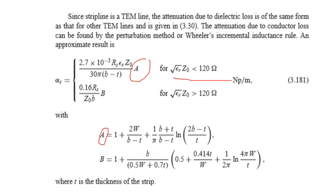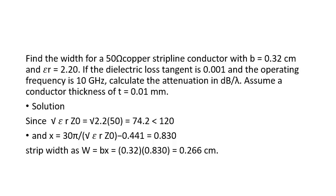Let's start with a problem. Find the width for a 50-ohm copper strip line conductor with b = 0.32 cm and εᵣ = 2.2. The electric loss tangent is 0.001 and operating frequency is 10 GHz. Calculate the attenuation in dB. It's a simple problem — the formulas are given and you just substitute. Since εᵣ and Z₀ are already given, find √(εᵣ) · Z₀ and check whether it is less than or greater than 120.